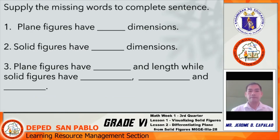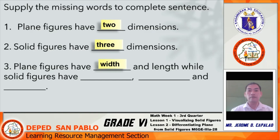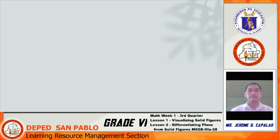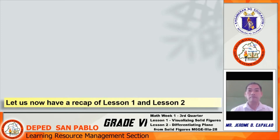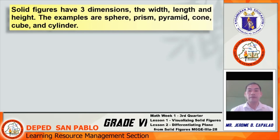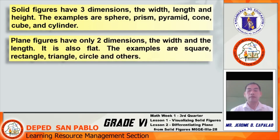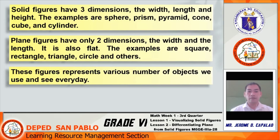Let us now reveal the answers. Plain figures have two dimensions. Solid figures have three dimensions. Plain figures have width and length, while solid figures have width, length, and height. Recap: Solid figures have three dimensions — width, length, and height — examples are sphere, prism, pyramid, cone, cube, and cylinder. Plain figures have two dimensions — width and length — they are also flat. Examples are square, rectangle, triangle, circle, and others. These figures represent the various objects we use and see every day.